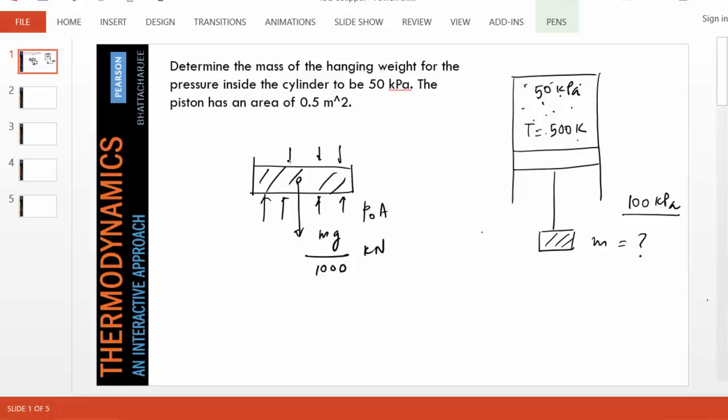So the pressure inside is going to push the piston down. Suppose the inside pressure is pi, then this would be the force downwards. So the net downward force is mg over 1000 plus pi times A, and the net upward force is this, all in kilonewtons.